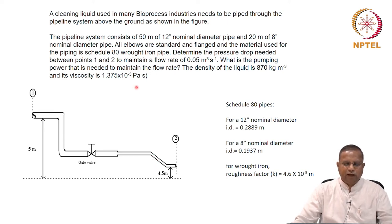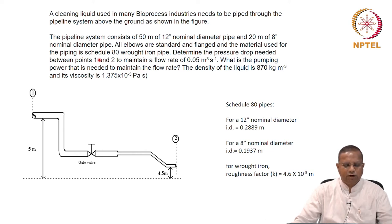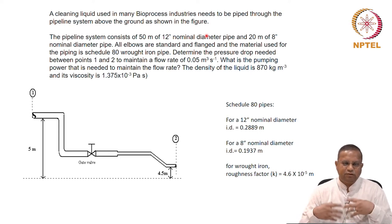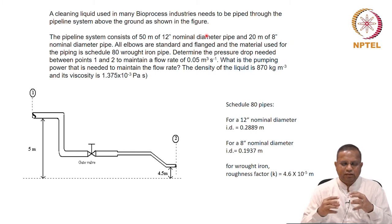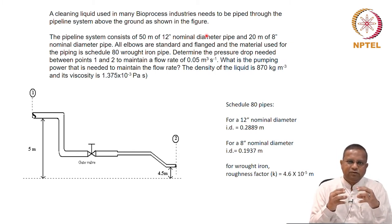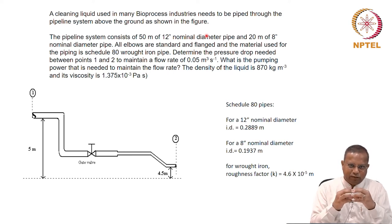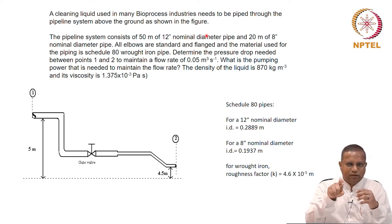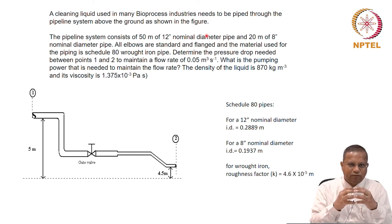Here you have some terms you may not have seen earlier — there is something called a nominal diameter and something called schedule 80. These are terms widely used in the practice involving pipes; they emerged out of practical convenience. The nominal diameter especially refers to something that helps people put together pipes that fit each other well. A long time back, people need not measure the outer or inner diameter to check whether pipes would fit.